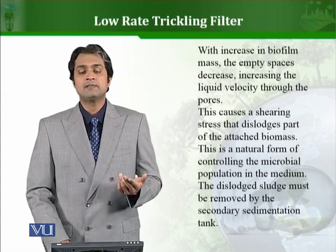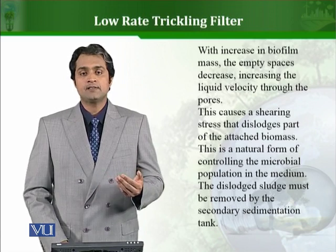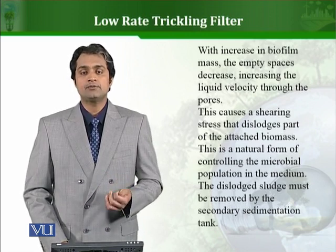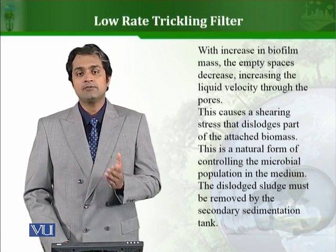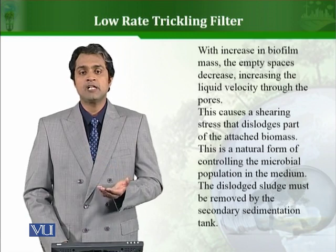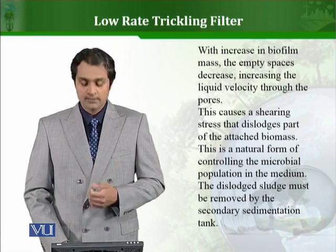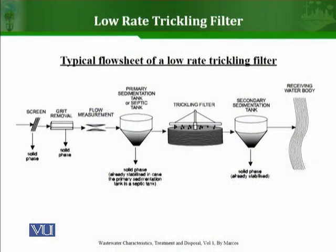The dislodged biofilm is then removed in a secondary sedimentation tank. We must ensure that the biomass used to treat the wastewater is removed before the treated effluent is released to the environment. A typical flow sheet of a low rate trickling filter includes: screening to remove solids, a primary sedimentation tank, the trickling filter itself, and then a secondary sedimentation tank to remove the biomass before the treated wastewater is released.